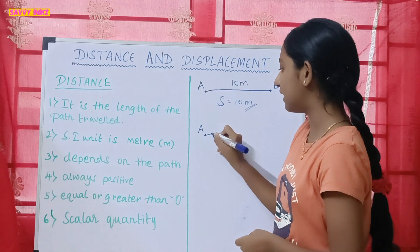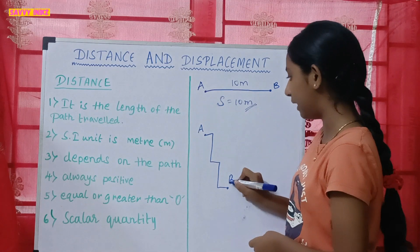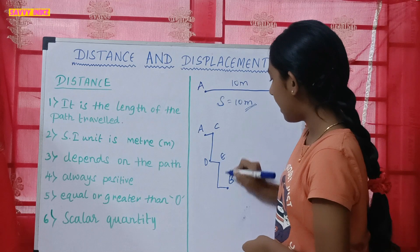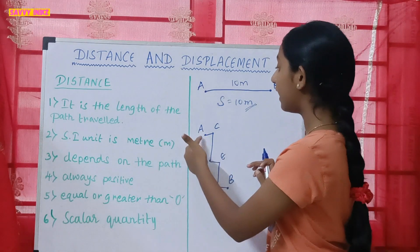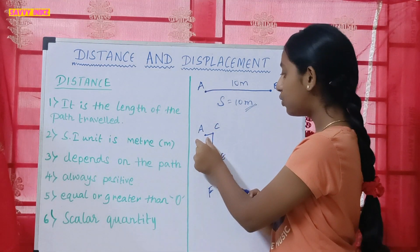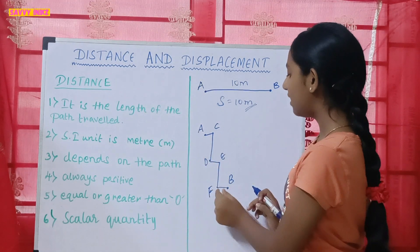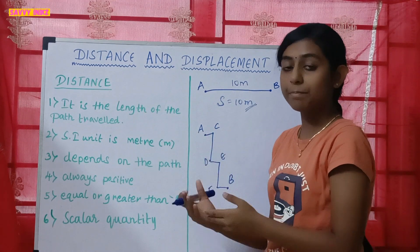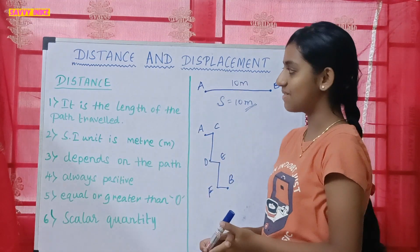A body is moving from point A and reaches its destination at point B, with intermediate points marked as C, D, E, and F. To find the distance from A to B, you have to measure each path segment: A to C, plus C to D, plus D to E, plus E to F, plus F to B. That total will be the distance, because distance depends on the path.